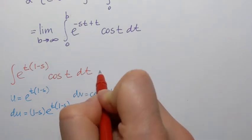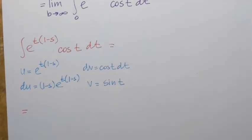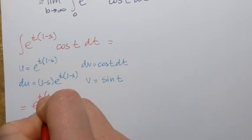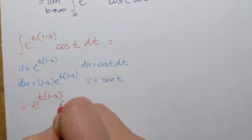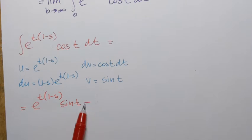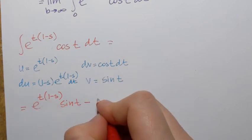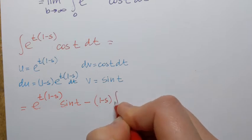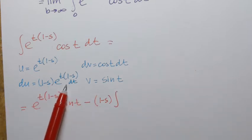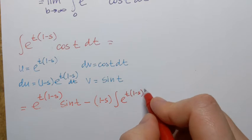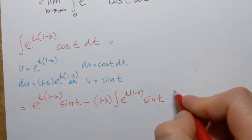Continuing with the integration by parts formula, I write u times v: that's e to the power t(1−s) times sine of t, and then minus the integral of v du. The constant (1 minus s) goes in front of the integral, and then inside we have e to the power t(1−s) times sine of t dt.